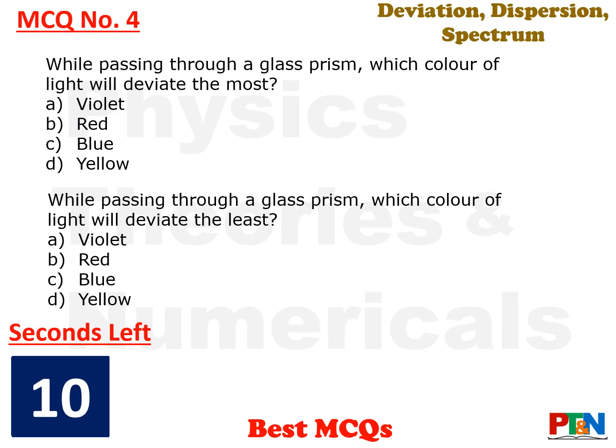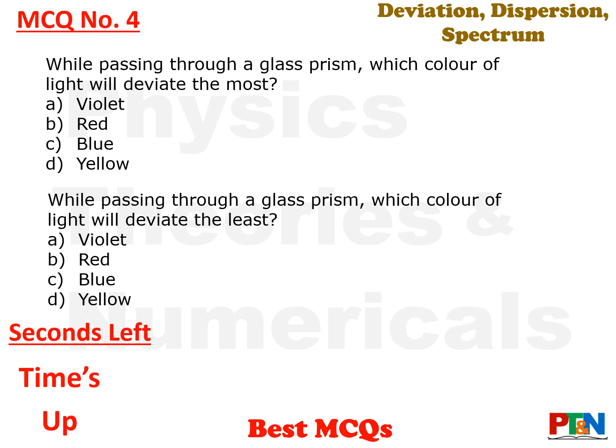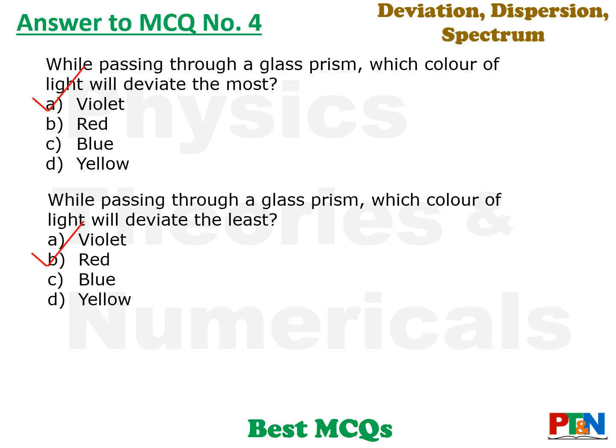Next MCQ. While passing through a glass prism, which color of light will deviate the most — violet, red, blue, or yellow? And the reverse: which will deviate the least? Ten seconds time for you, time starts now. You should not need the full ten seconds here because you know the concept. Time is up. The answer: violet color will deviate the most and red will deviate the least.